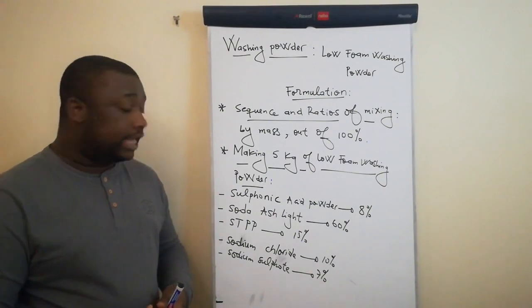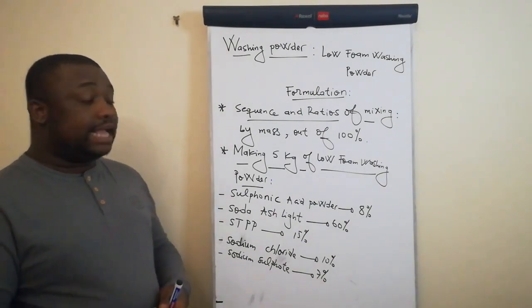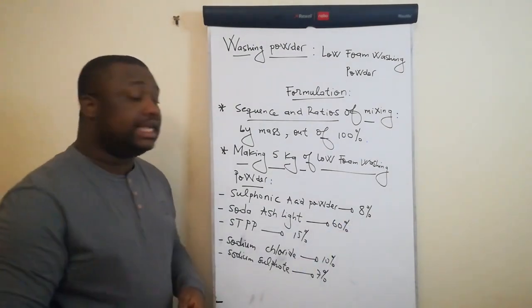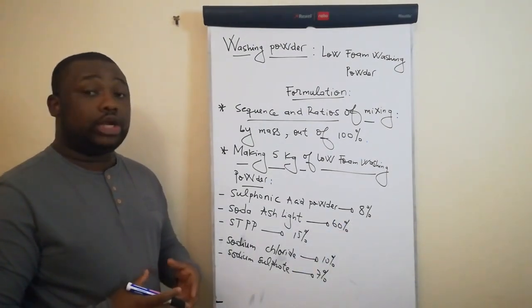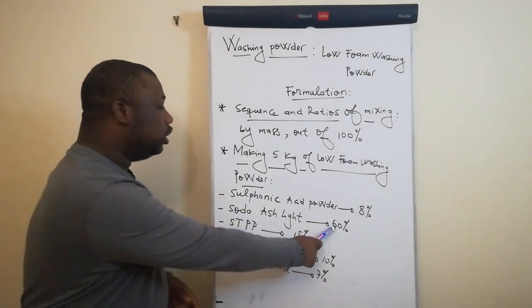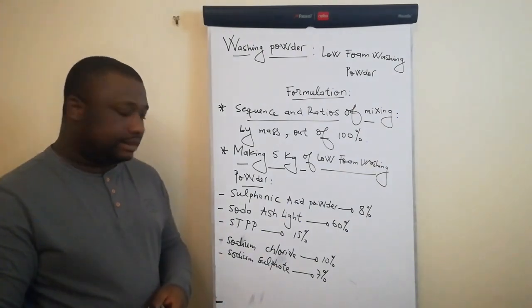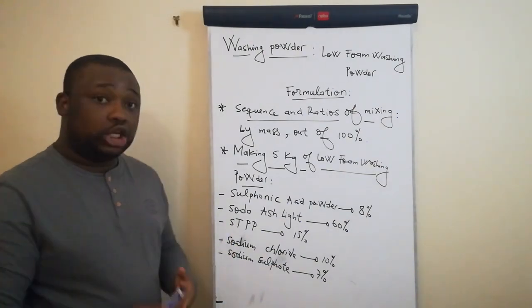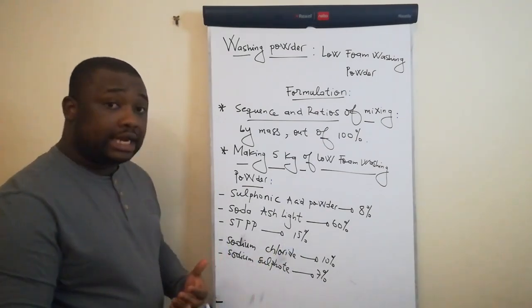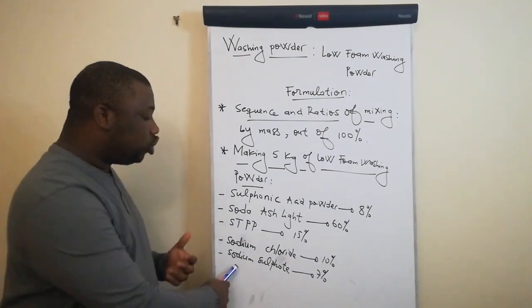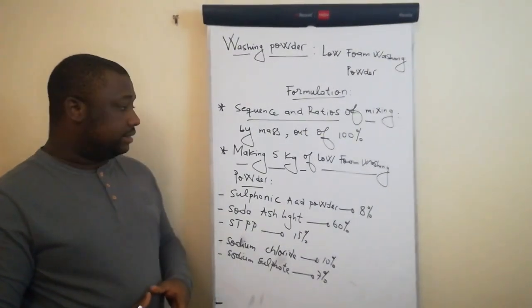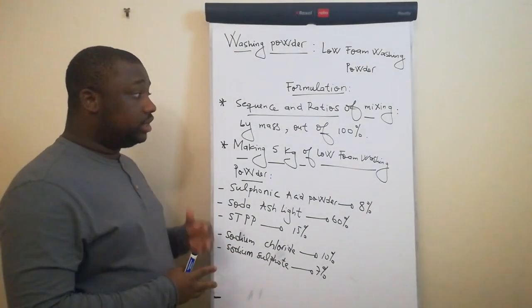In terms of ratios — all done by mass out of 100% — sulfonic acid powder should be 8% of the total mass, soda ash light should be 60% of the total mass, STPP should be 15% of the total mass, sodium chloride should be 10% of the total mass, and sodium sulfate should be 7% of the total mass.